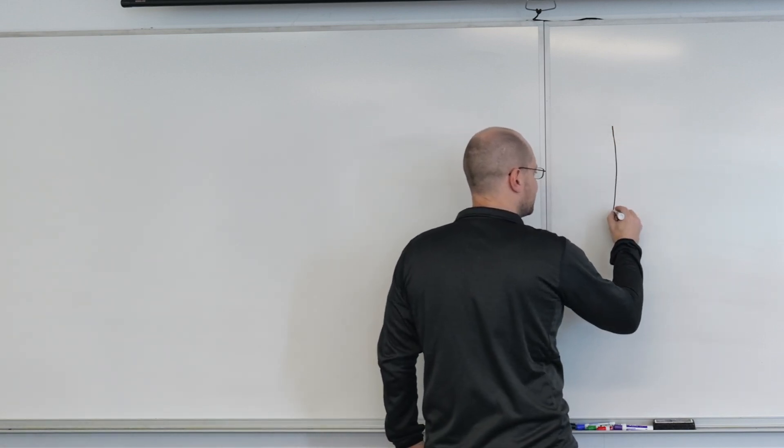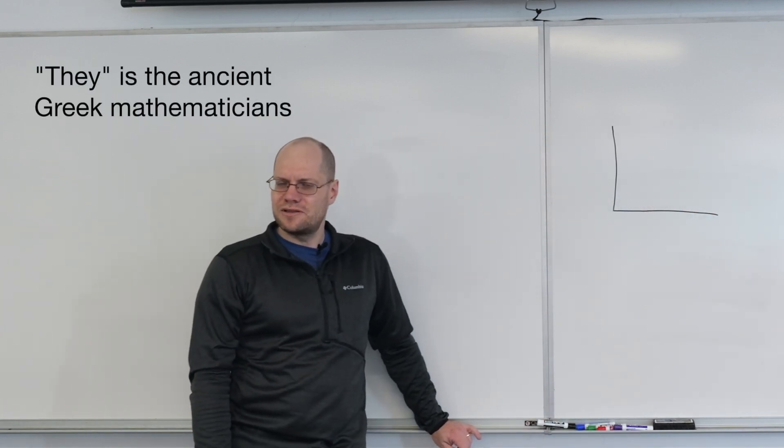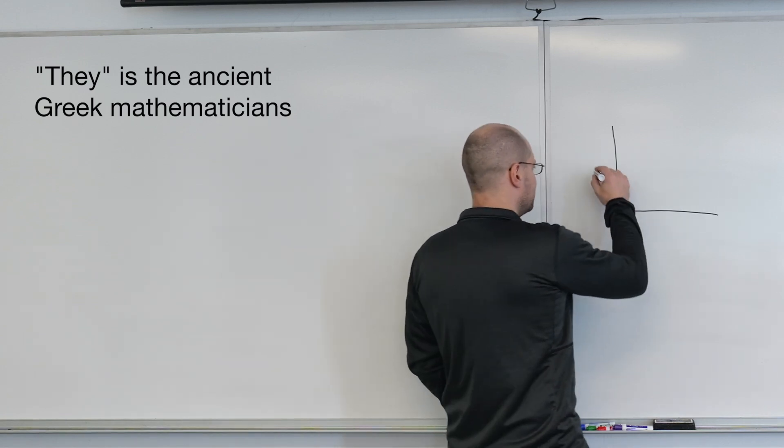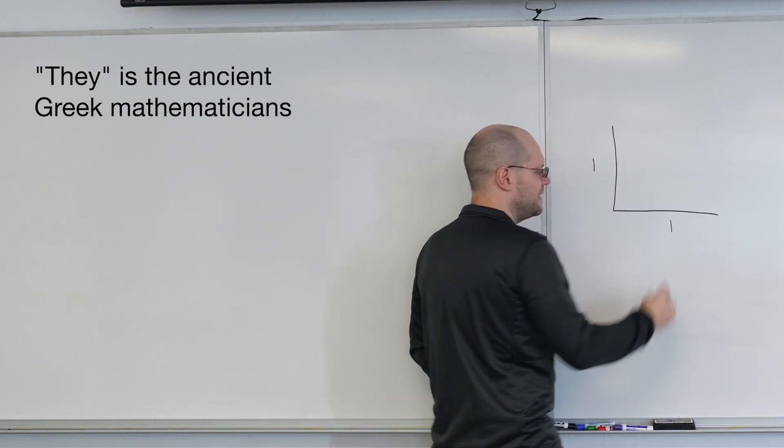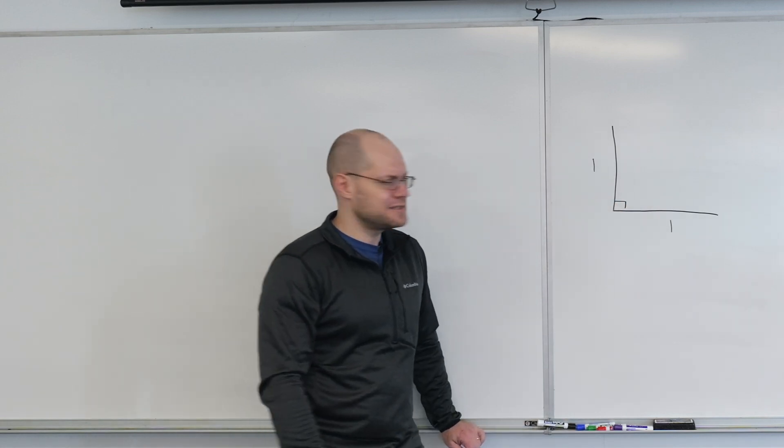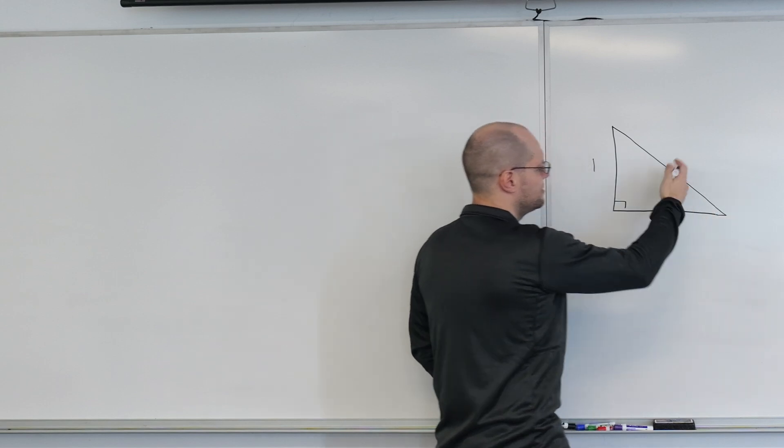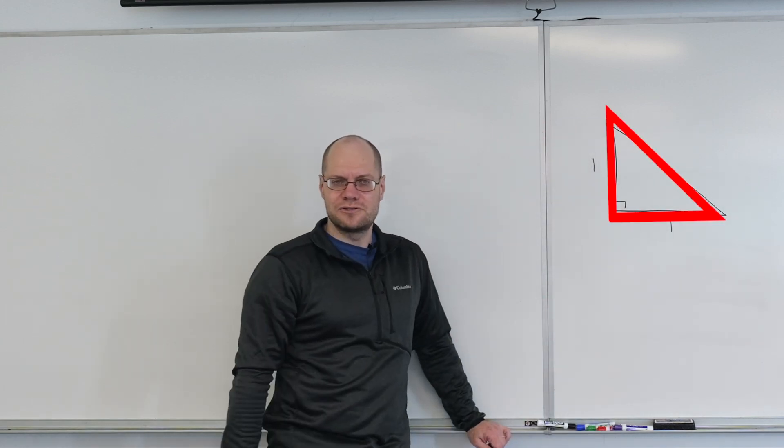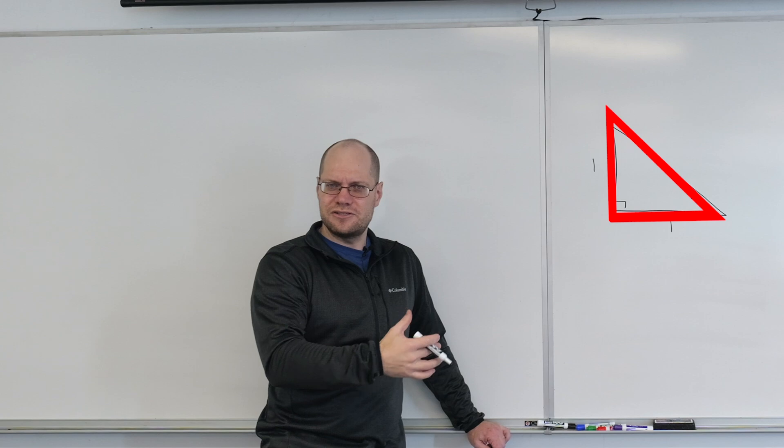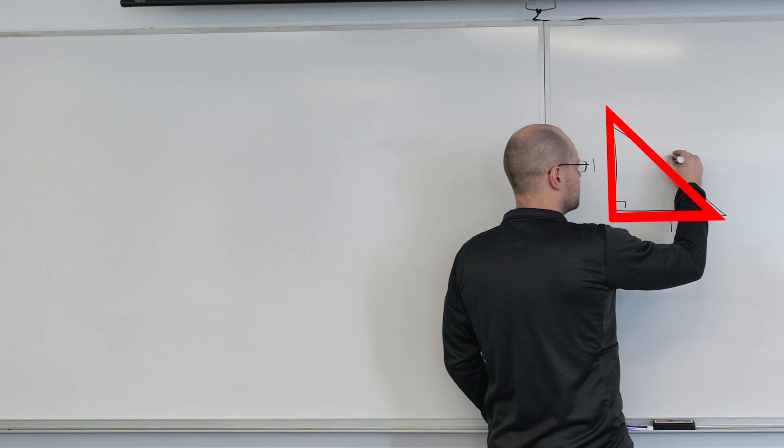...a 45-45-90 right triangle, the isosceles right triangle. They realized that the hypotenuse should be a length such that when you square it, it becomes two. So we now denote it by square root of two.